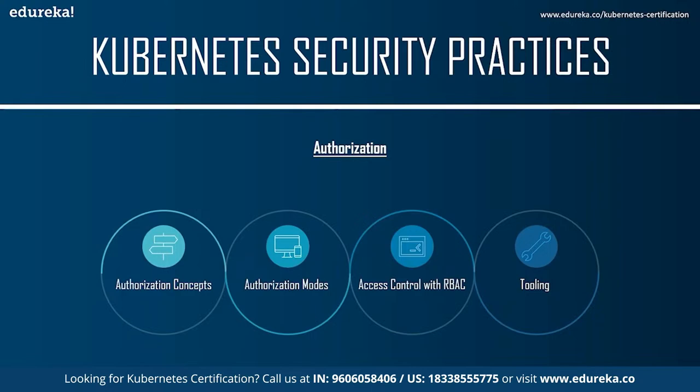The authorization flow: the client's request is first authenticated; if successful, the credentials are taken as one input to the authorization module; the second input is a vector containing the request path, resource, verb, and namespace; if the user or application is permitted to execute the action on the resource, the request is passed on to the next component in the chain — the admission controller — otherwise the authorization module returns an HTTP 403 Forbidden response and the request fails.